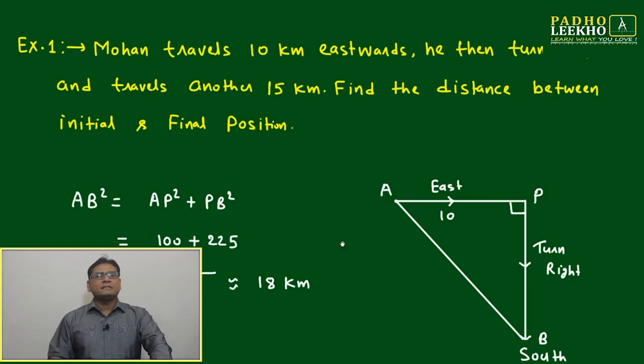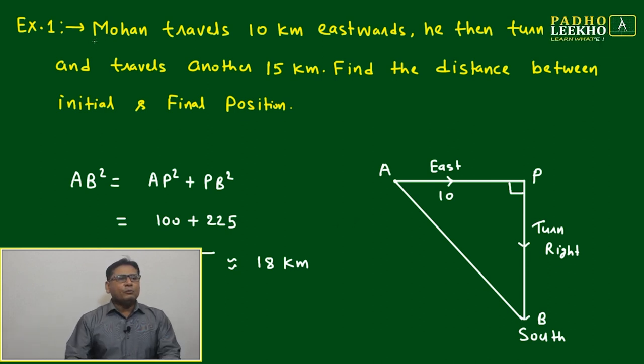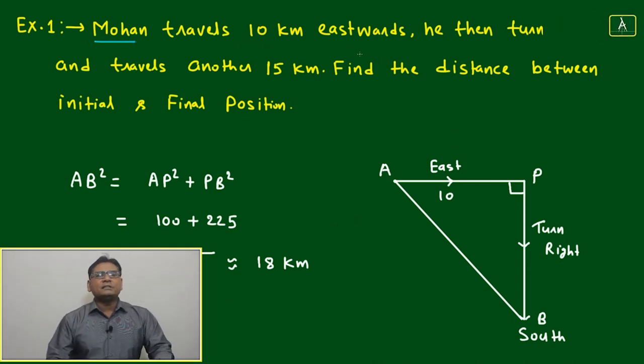Let's try to solve a few examples that will give you the confidence to handle this type of question. Example 1: Mohan travels 10 kilometers eastward, he then turns right and travels another 15 kilometers. Find the distance between initial and final position.